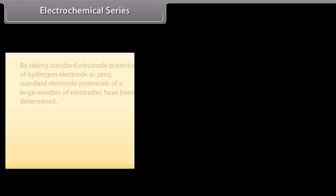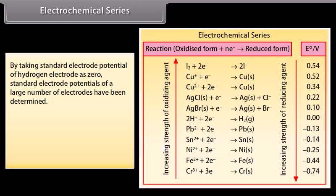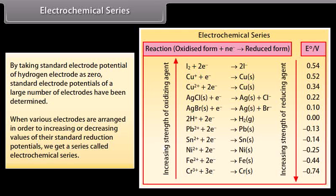Electrochemical series: By taking the standard electrode potential of hydrogen electrode as zero, standard electrode potentials of a large number of electrodes have been determined. When various electrodes are arranged in order of increasing or decreasing values of their standard reduction potentials, we get a series called the electrochemical series.